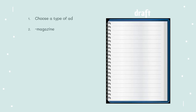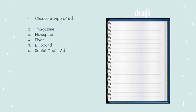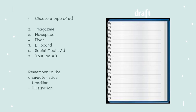Your draft will be in your notebook. You're going to choose the type of ad: a magazine, a newspaper, a flyer, a billboard, or a social media ad. Some of you sent great Lego and Wendy's advertisement exercises — you could do something like that. Also a YouTube ad. Remember the characteristics: headline, illustration, description, and contact info — that's the minimum your ad must have.